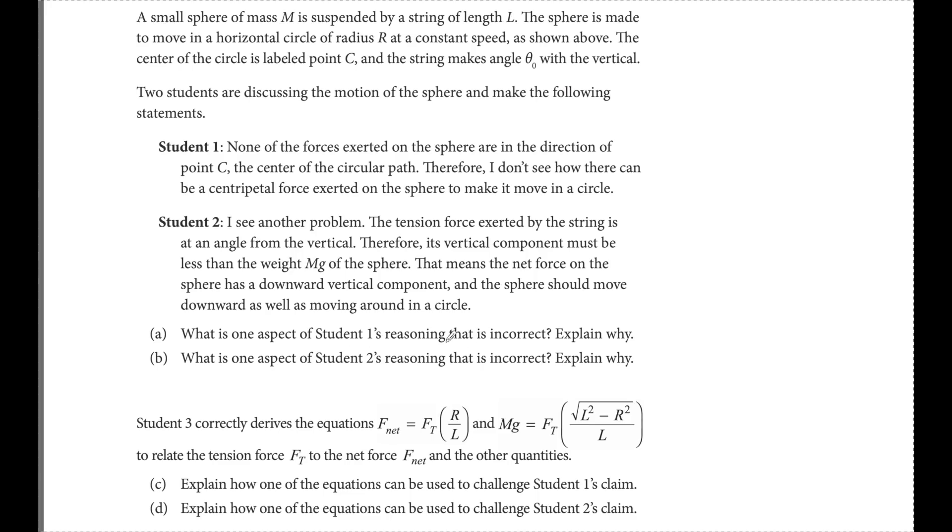What is one aspect of student one's reasoning that is incorrect? When I'm looking at this, I need two parts to each answer. I need to list what was incorrect, and then I'm going to explain. Some misconceptions about FC is that it's a separate force, an additional force, or it has to be a single force. That's not true. Remember, it is a net force, and it also can be the component of another force that causes it. This student here is looking for a separate FC. The student thinks that FC must come from its own separate force, and that force must be labeled FC. Now I'm going to explain why there still could be one even though there's no separate force. The horizontal component of the tension is towards the center. So the horizontal component F tension X, that is what's going to be equal to FC.